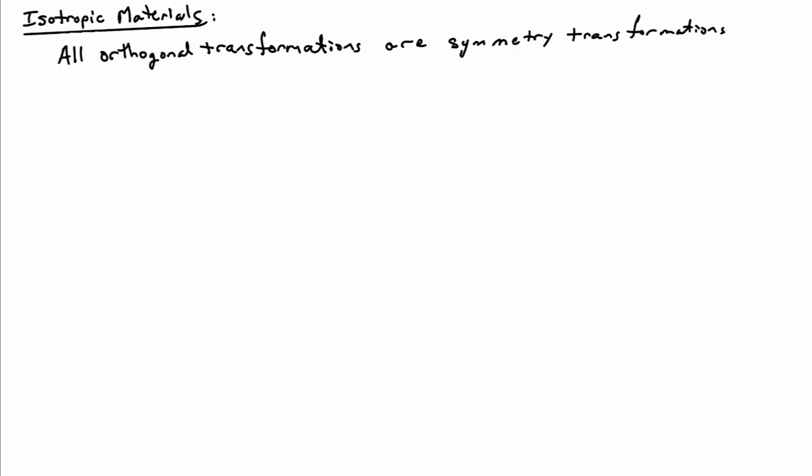I'd like to now discuss isotropic materials. These are materials where all orthogonal transformations are symmetry elements for the material you're considering. Common examples of isotropic materials are polycrystalline materials when you look at them at a scale larger than a handful of grains. Amorphous materials are also considered to be isotropic usually, depending on how they've been manufactured, but they often are isotropic.